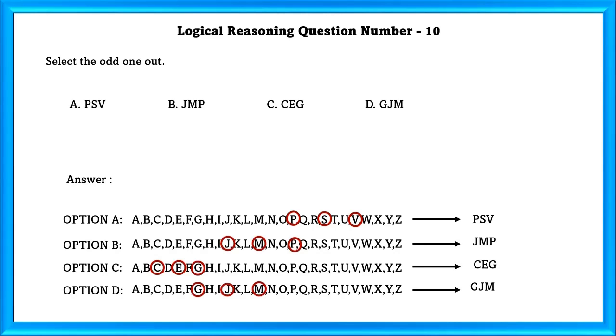In all the options except for C, we can see that the starting of the letter differs by 2 to the second letter. But in C, the difference is only 1. So the odd one out is C.